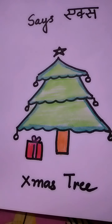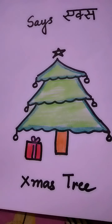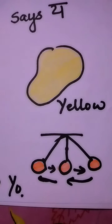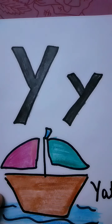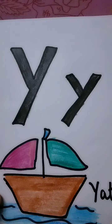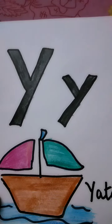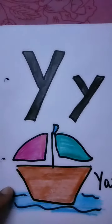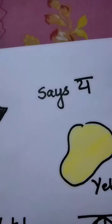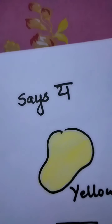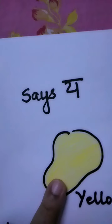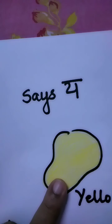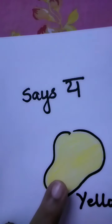What comes after X? Y. Y says ya. Y says ya. Yellow is a color — Y, ya, ya, ya.